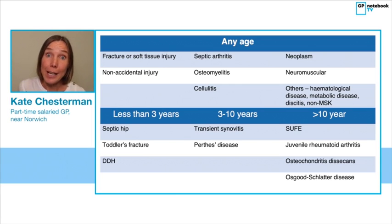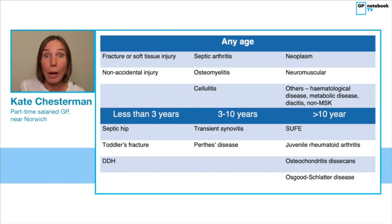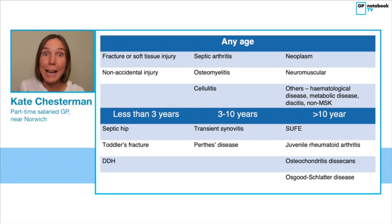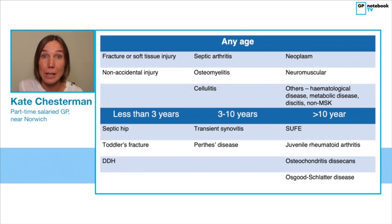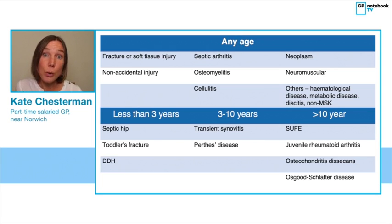In our young age group — under the age of three — differentials to be aware of include septic hip. I've included this again in the under-three age group because it is an important differential at this age and much more common than transient synovitis in this young age group, so always one to be aware of. Children at this age can also present with toddler's fractures or developmental dysplasia of the hip.